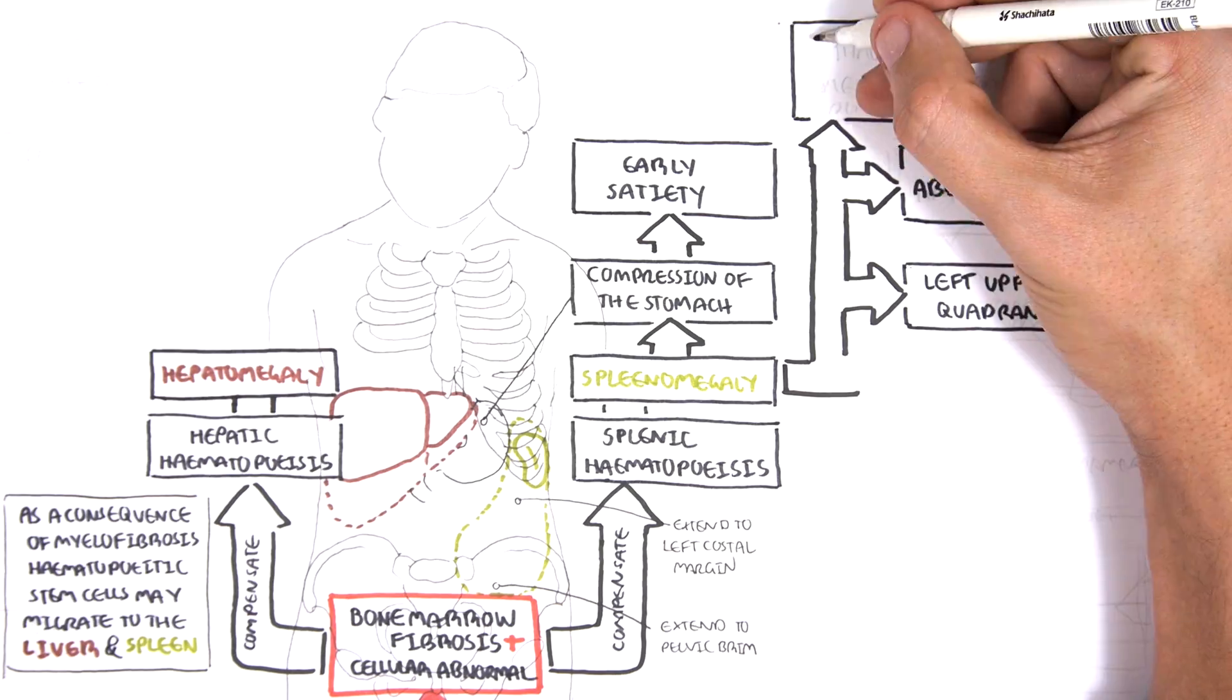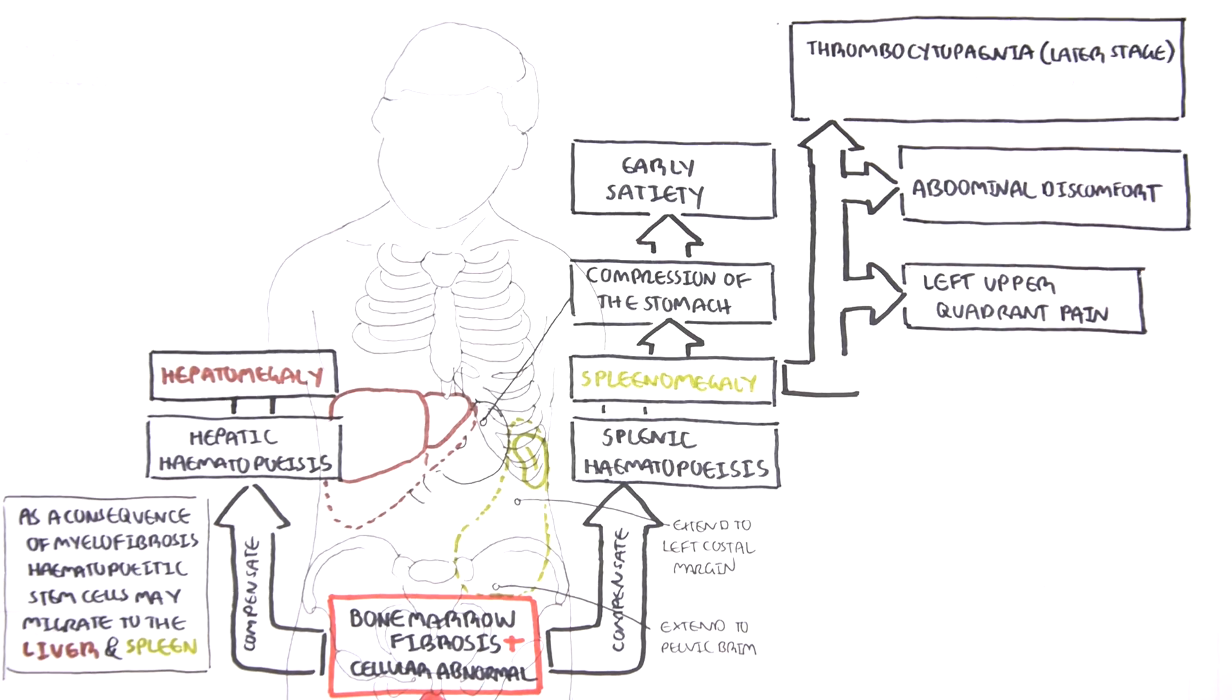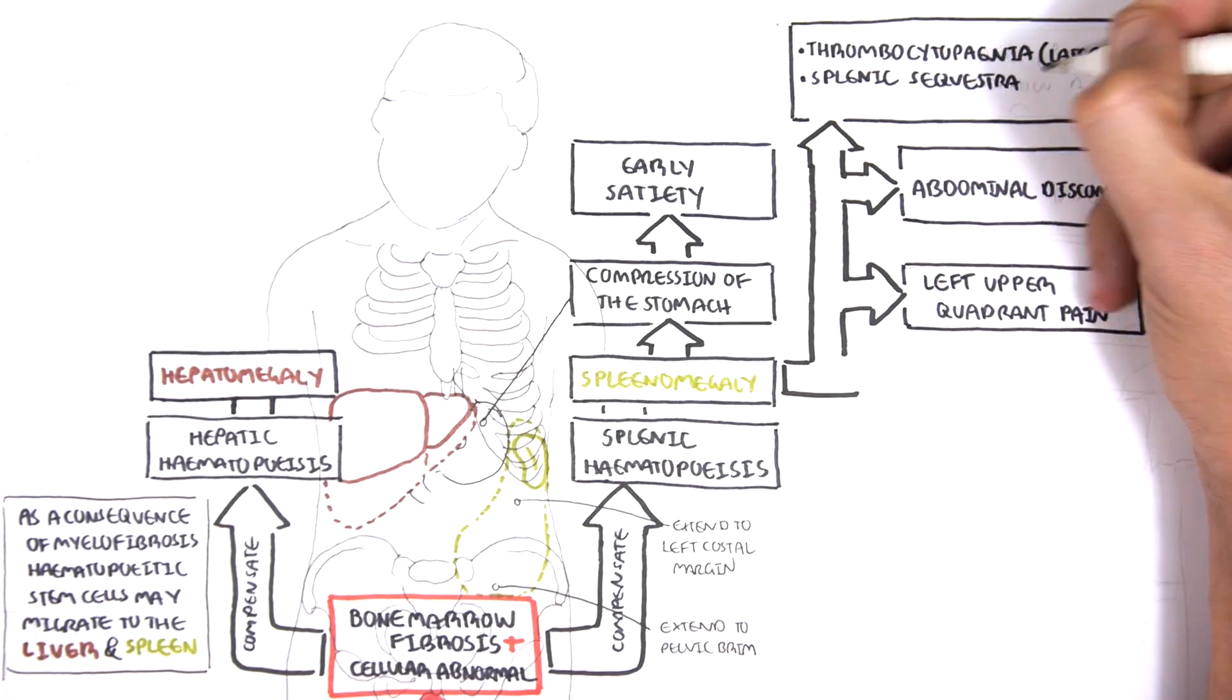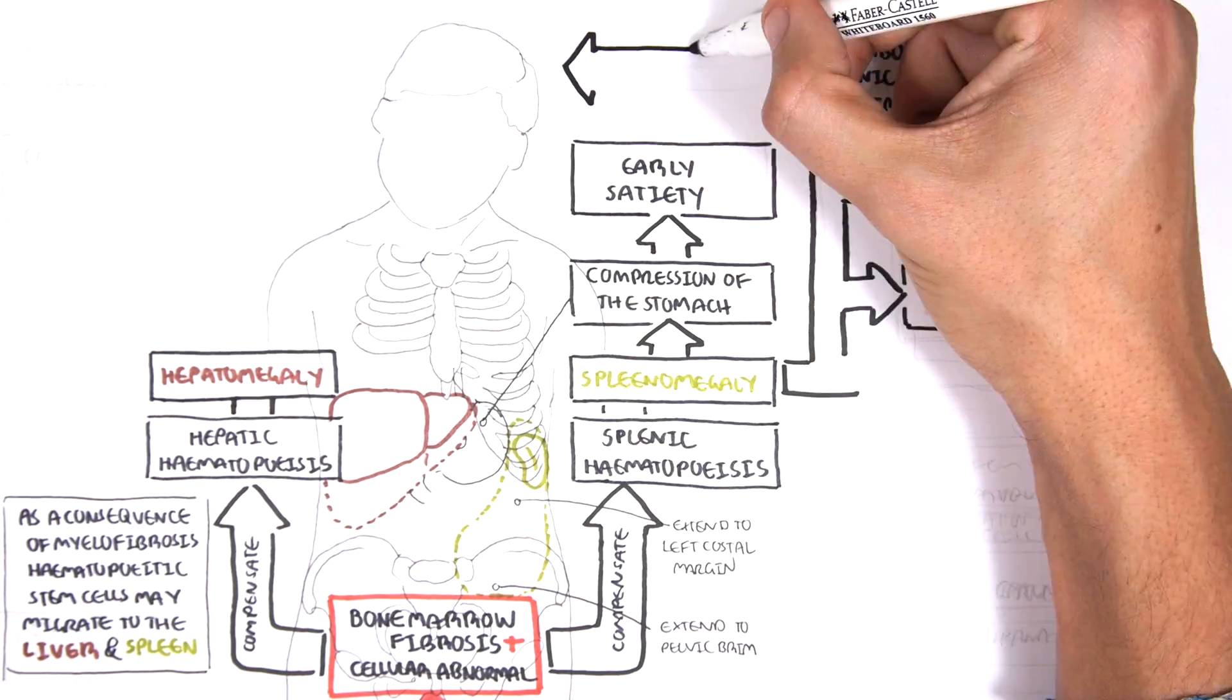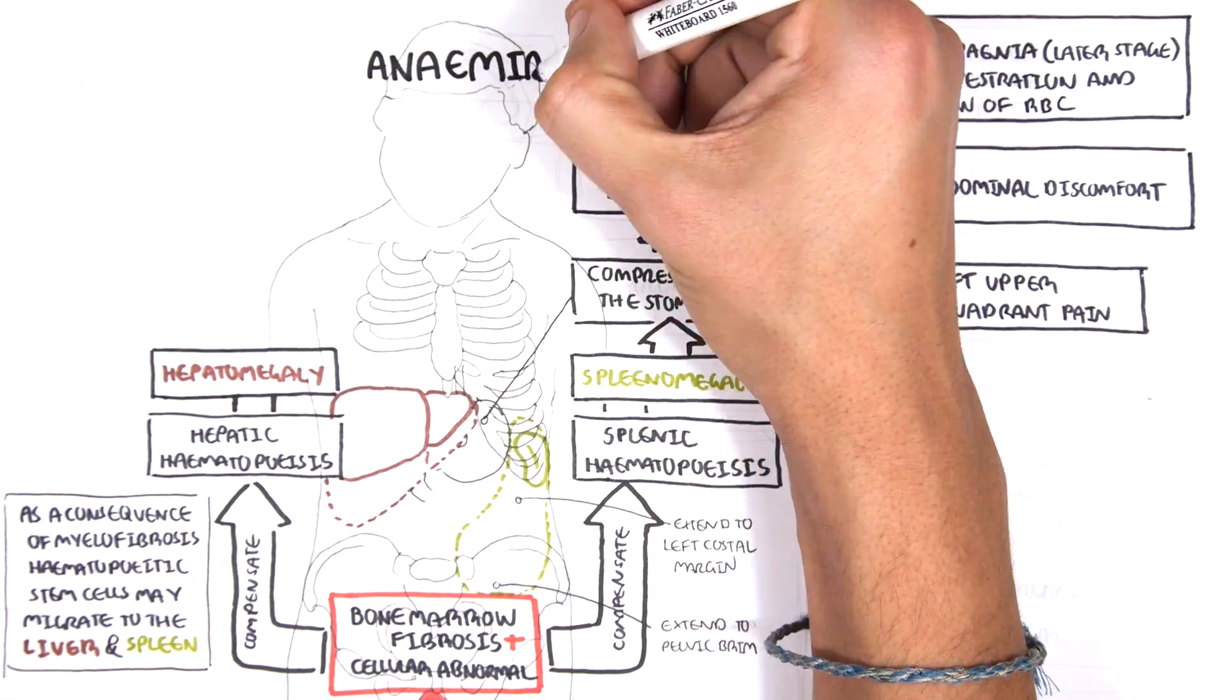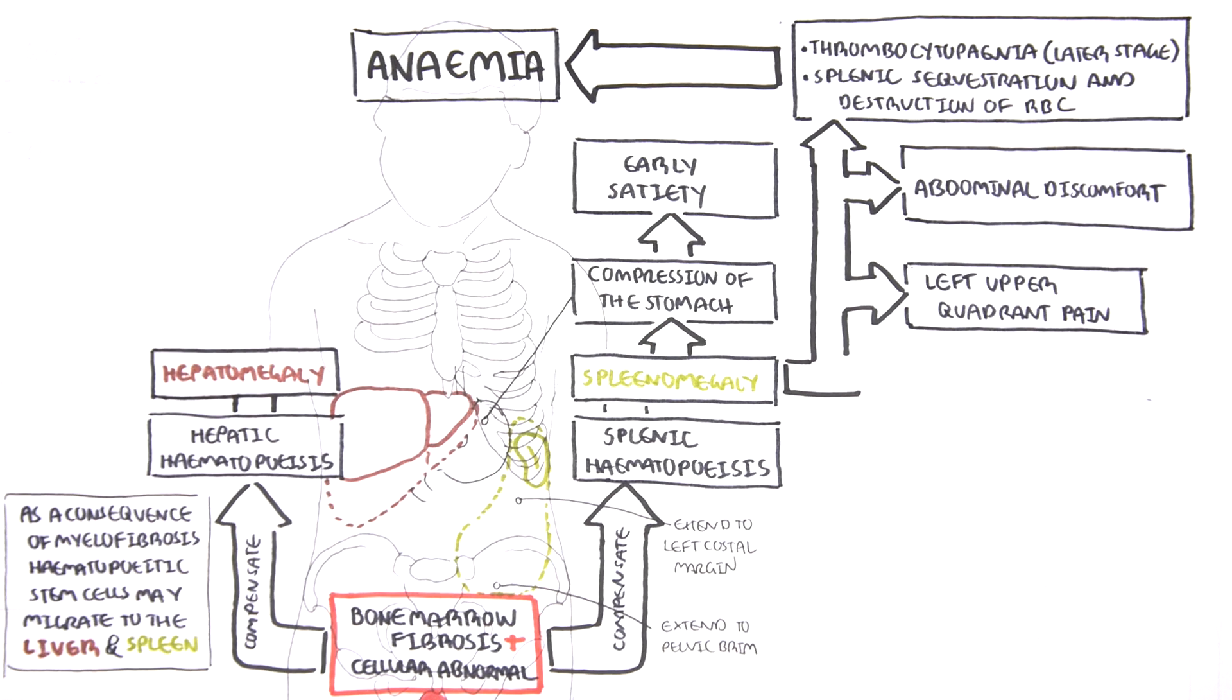Splenomegaly can cause thrombocytopenia in later stages of the disease, and also sequestration and destruction of red blood cells. This is one of the contributors of anemia seen in people with myelofibrosis.